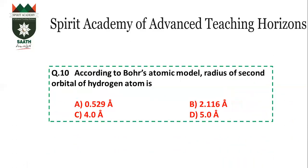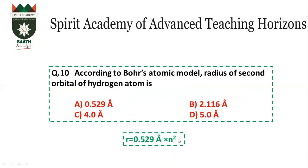Question number 10: According to Bohr's model, find the radius of the second orbit. The formula for radius is 0.529 Å × n². For the second orbit, n=2, so n²=4. Multiplying 4 by 0.529 gives the answer. The answer is B.